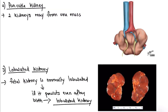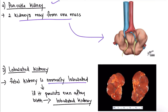The second anomaly of shape is the pancake kidney, in which the two kidneys may fuse into one mass, as clearly seen in the image. The third is the lobulated kidney — the fetal kidney is normally lobulated, but if this lobulation persists even after birth, it is called a lobulated kidney, as seen in the image.